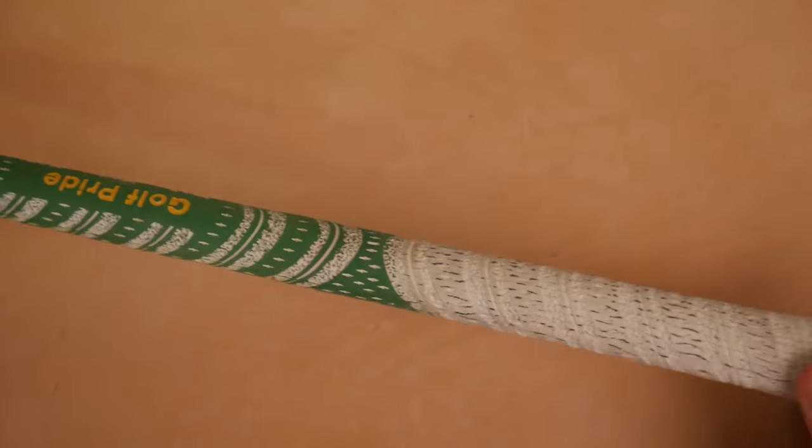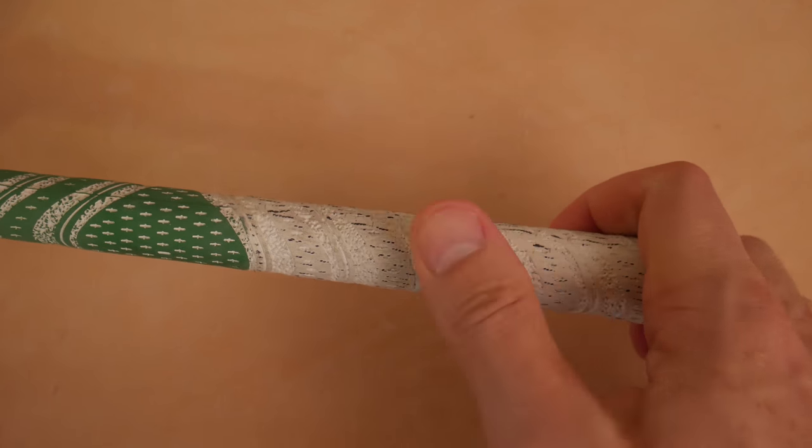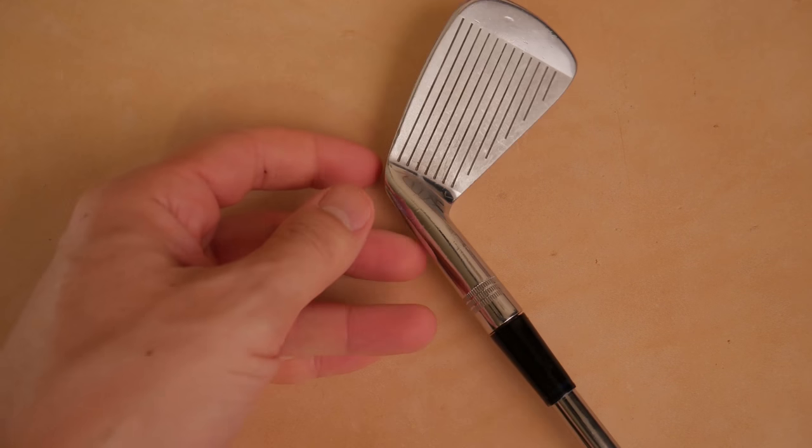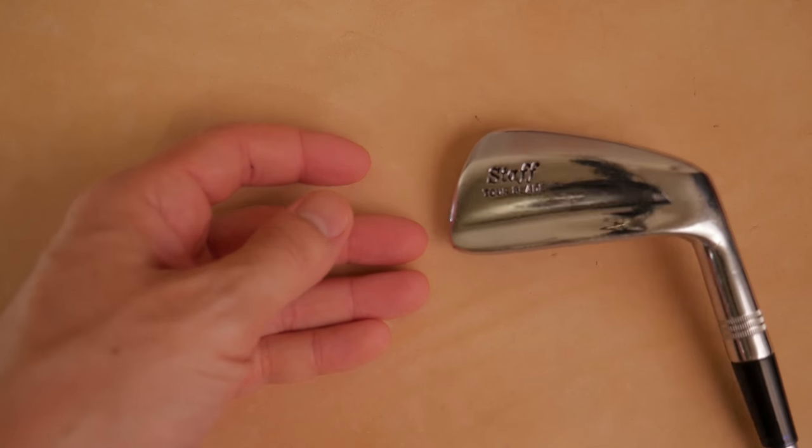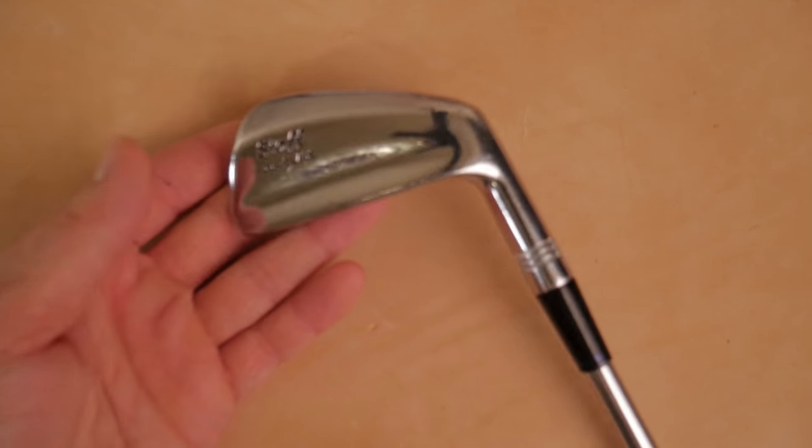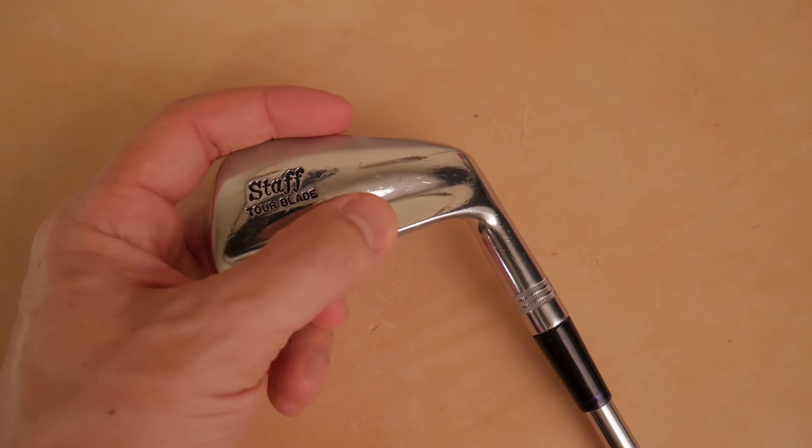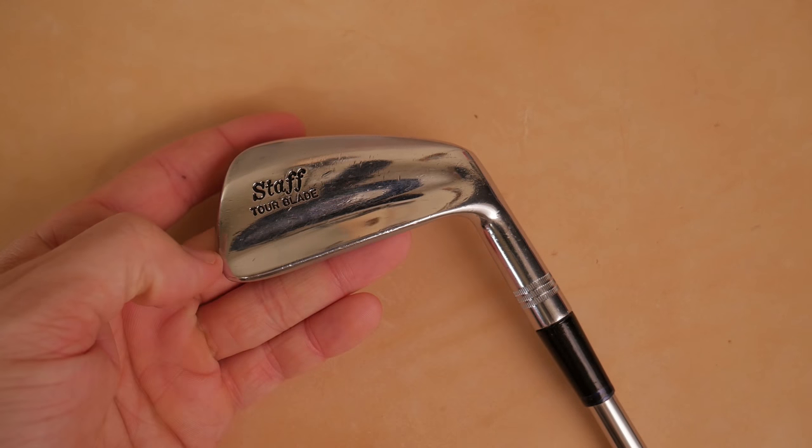And then we have a golf pride. Is that cordy right there? Half cordy grip. Multi-compound. And there we have it. That's what it looks like. Now, what do you think of the looks of this club? Let's go out and hit a few shots. And we'll be right back.